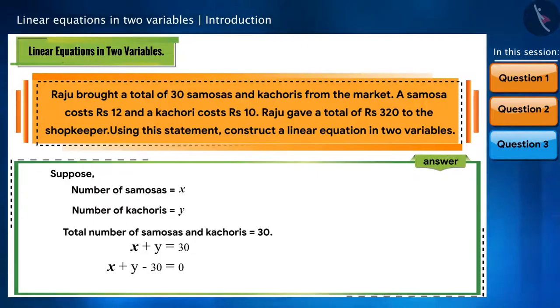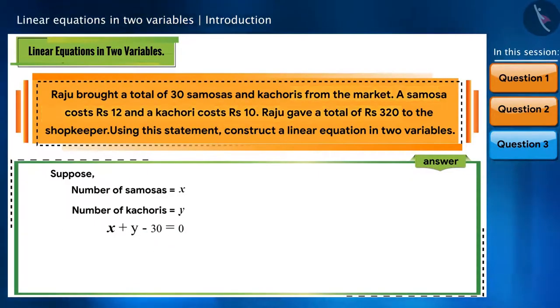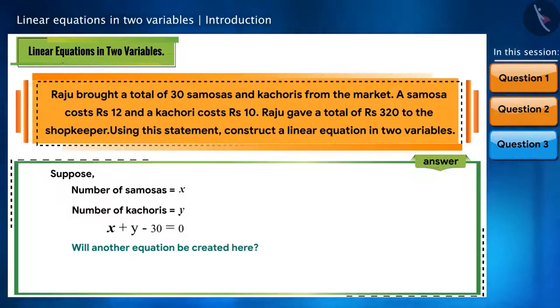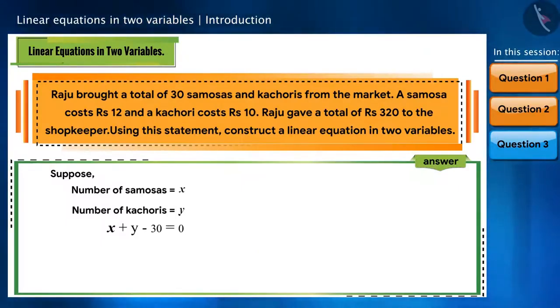Did this question end here? Why is further information given in this question? Can we form another equation from this? Yes. Let's see how. We already assume the number of samosas as x and the number of kachoris as y.